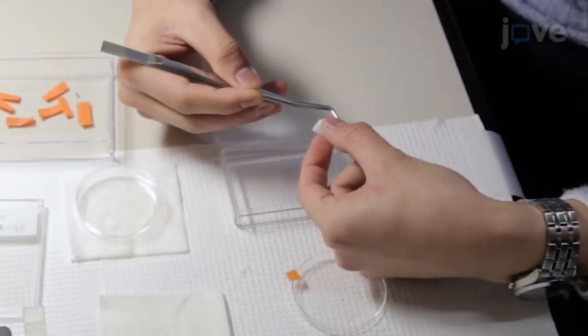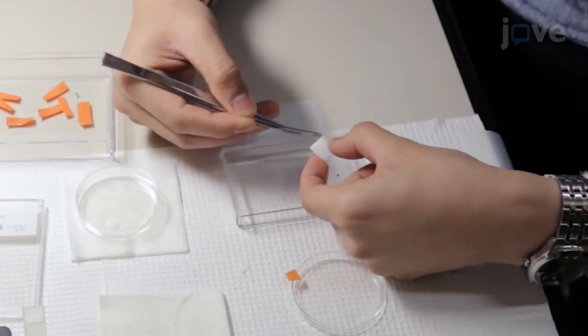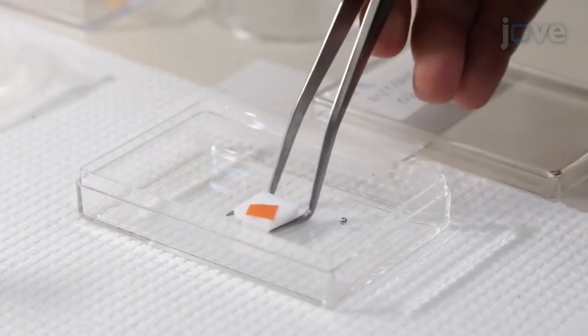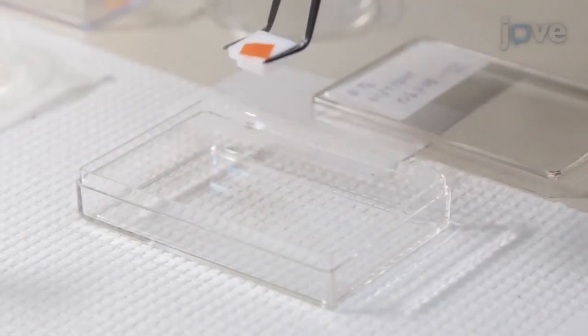Then, thread the string through the center hole of a PTFE cuvette cap. Tape the string in place with 22 mm of the string hanging below the cap.